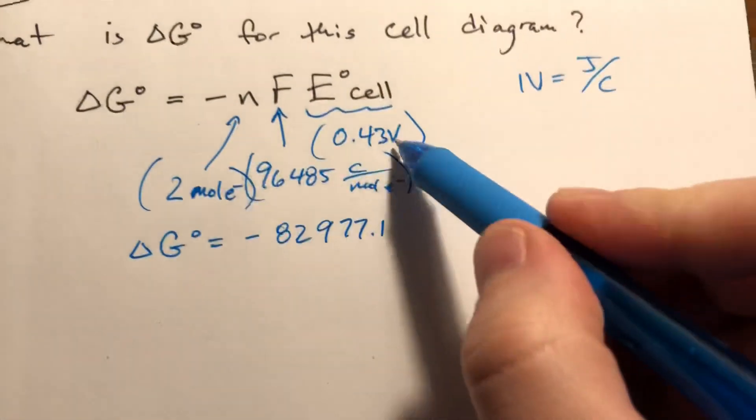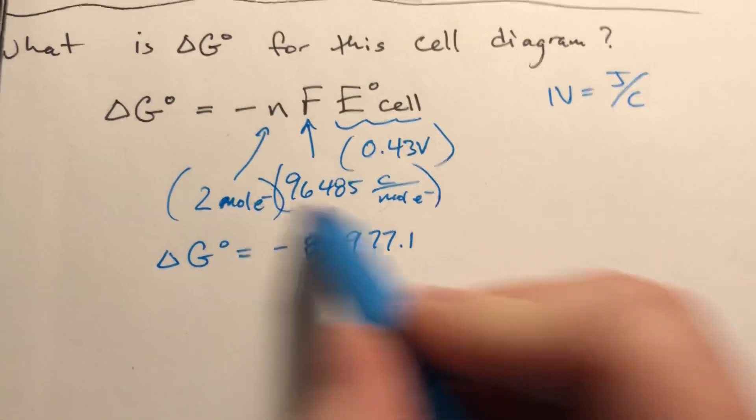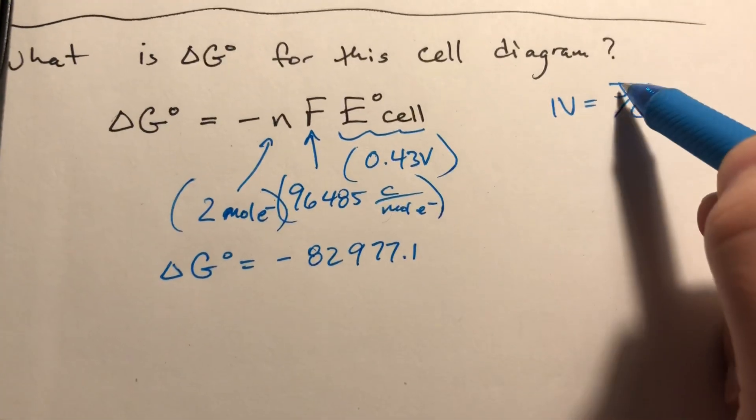Units here. If we visualize this as joules per coulomb, and this is coulombs per mole, and this is moles, the moles will cancel out, the coulombs will cancel out, and we'll end up with joules.